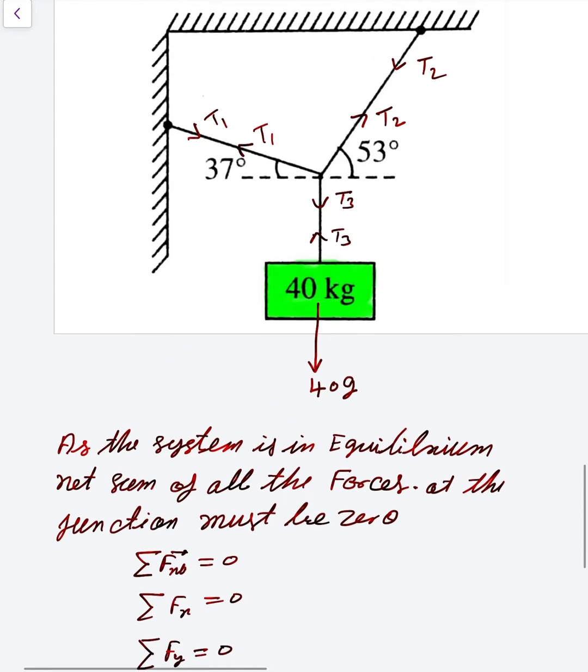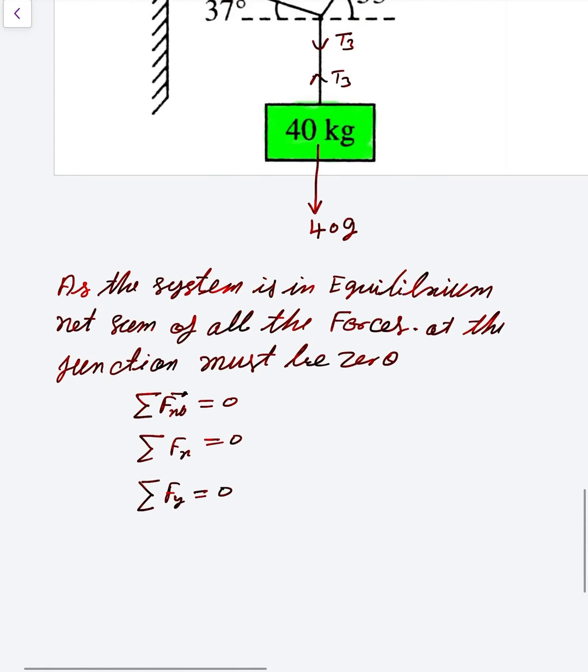So T3 equals 40g, which is 40 × 9.8, that is 396 Newtons. T3 is basically 396 Newtons.